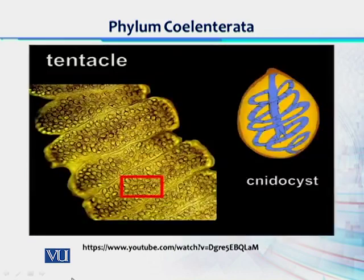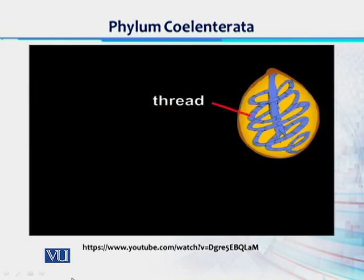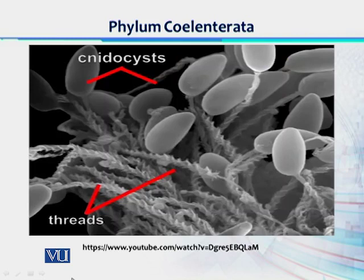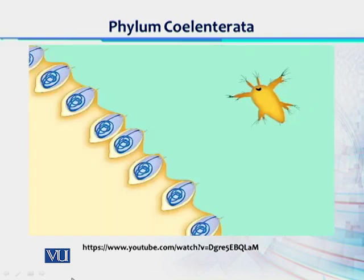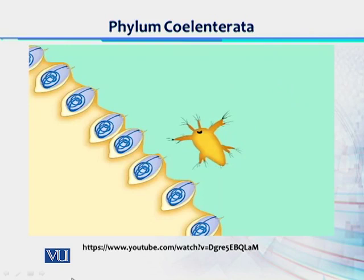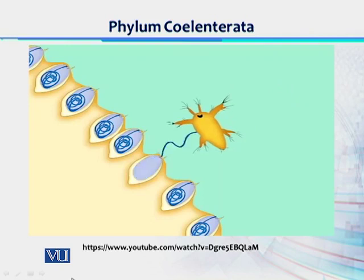This picture shows numerous cnidocysts on the surface of a jellyfish tentacle. These organs contain a coiled thread, often bearing spines. Here, discharged cnidocysts and an everted thread are shown. The cnidocyst discharge is triggered, for example, when human skin or prey comes in contact with the tentacle. The thread is ejected and penetrates the victim, and toxin is injected into its tissues.